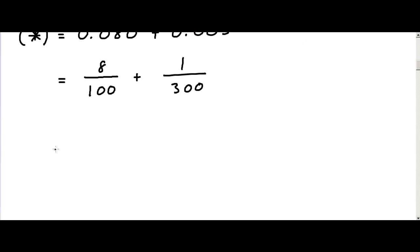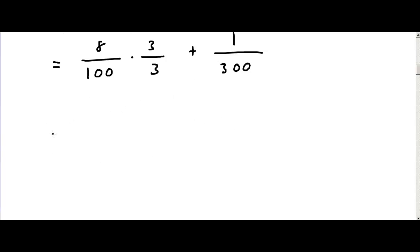And this is equal to 8 over 100 times 3 over 3 plus 1 over 300. And this is equal to 24 over 300 plus 1 over 300.